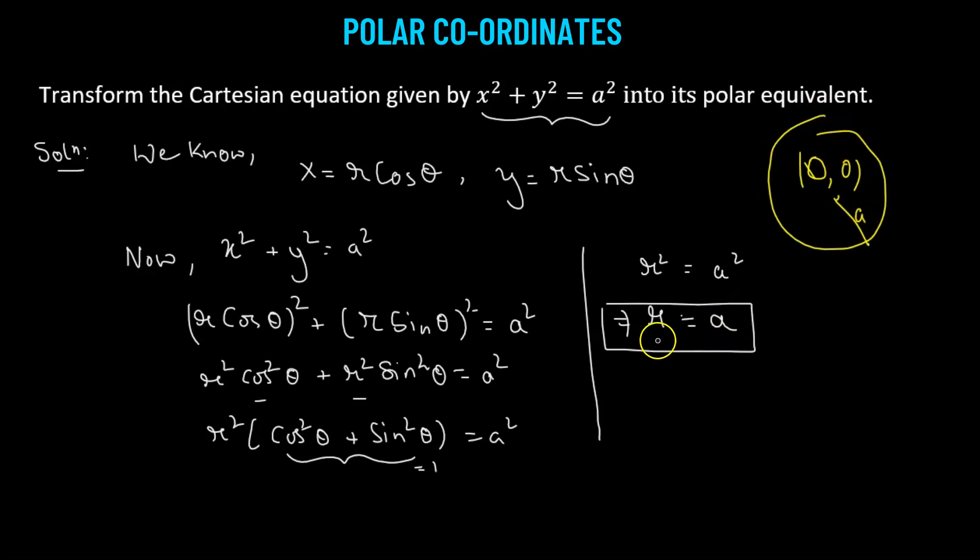Now here, all we are given is r equals a. r equals a means that the radius of the circle is a units. And we are not provided with the information of theta. That means theta can take any value between 0 and 2 pi. So it's a circle.